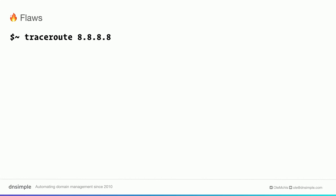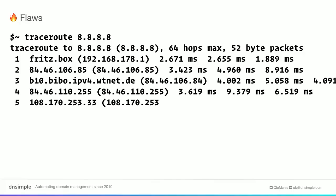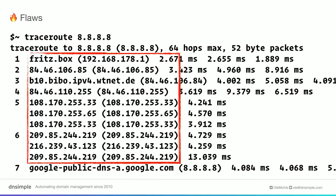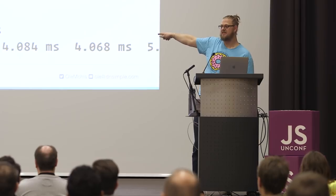Here you see the traceroute from my local computer at home to the Google public DNS resolver. There are six steps in between: the first is my router at home, then there's my ISP, and then a few other network providers in between. So my DNS datagram, my UDP packet, travels over all of these hops.